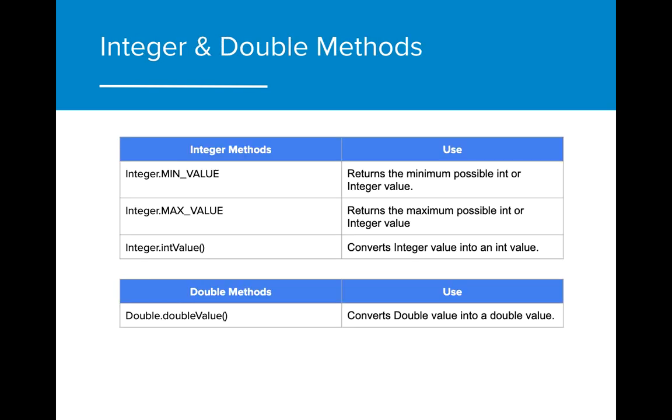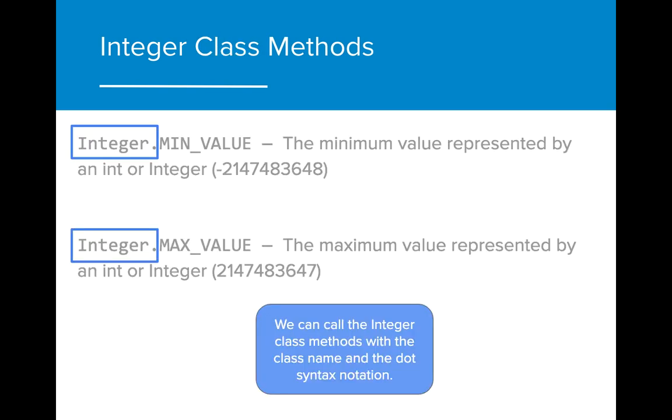Just as other classes have methods, the wrapper classes have methods that can be utilized. Let's discuss the Integer.MIN_VALUE and Integer.MAX_VALUE. We looked at these values in lesson 1.5. Note the Integer class designation at the beginning.